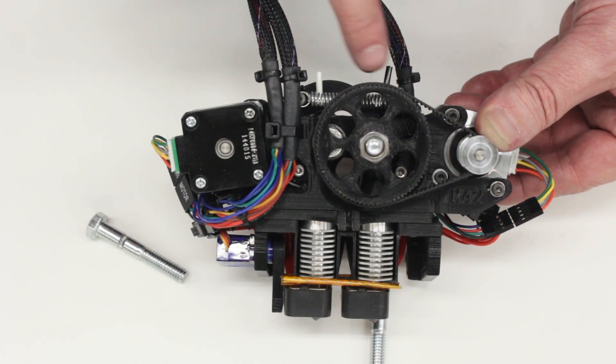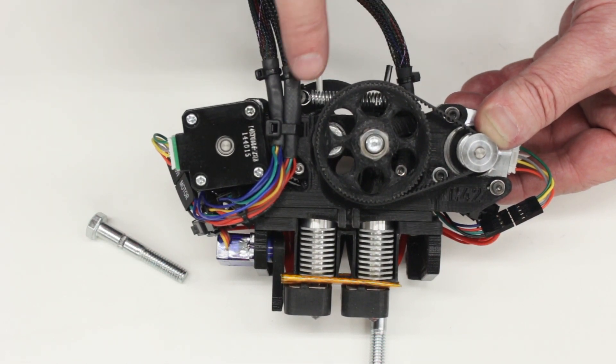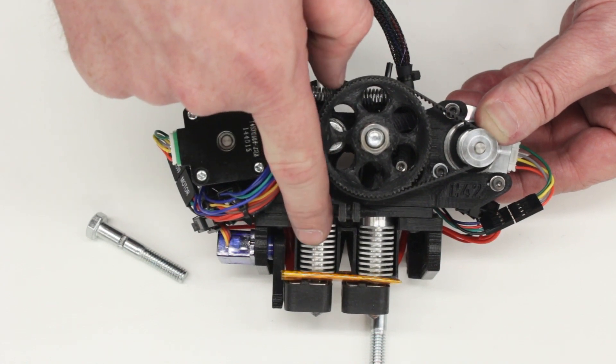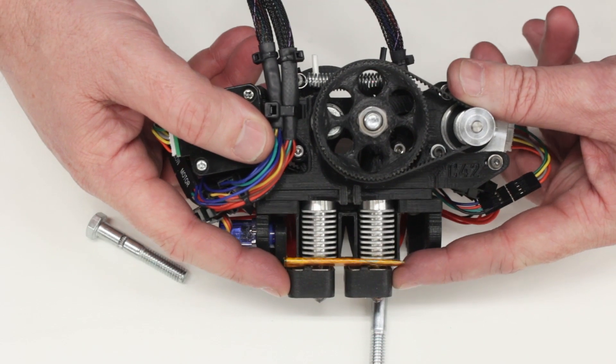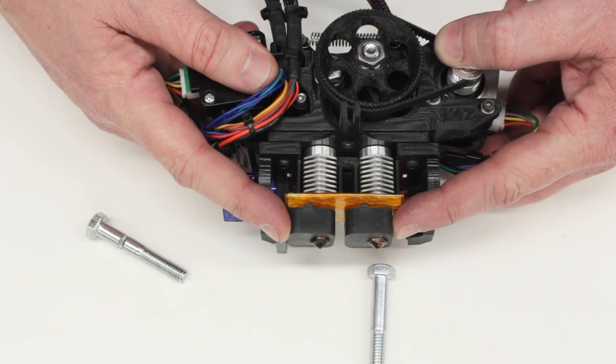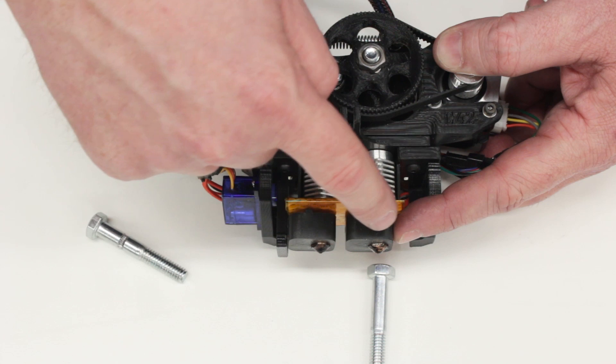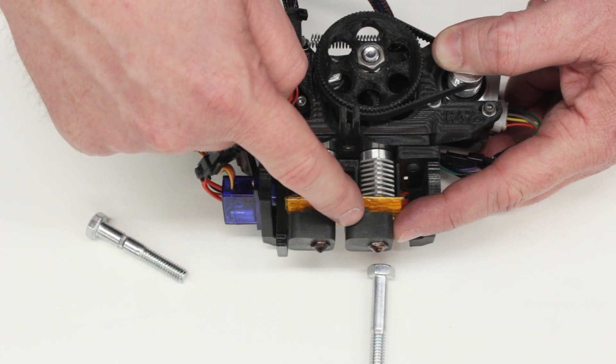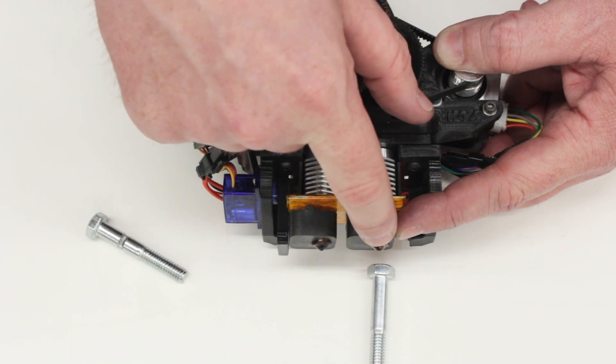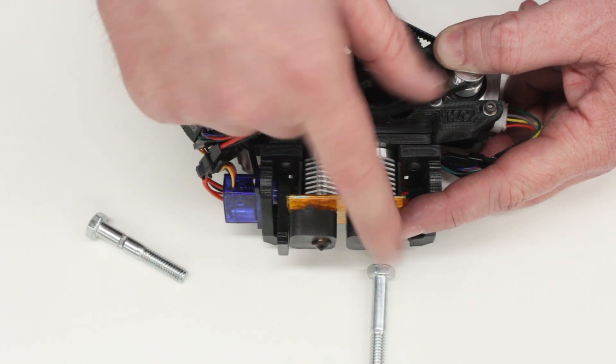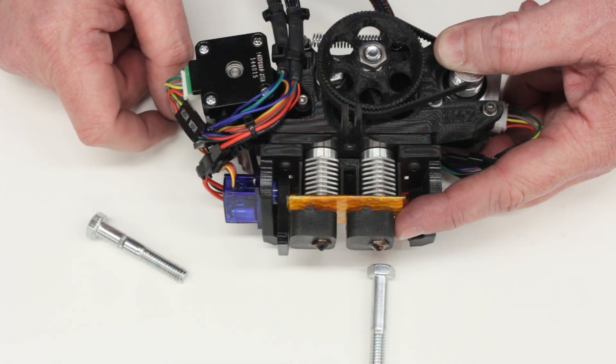So essentially what happens is you have these two pieces of filament and they're driven down through the heat break into this block. And there's two of them, one for each filament. And this is an aluminum block with a nozzle on the bottom. And this is heated to a temperature above the melting point of the plastic. So as the filament is forced in here, it melts and comes out this nozzle and builds up in layers to make 3D printed parts.